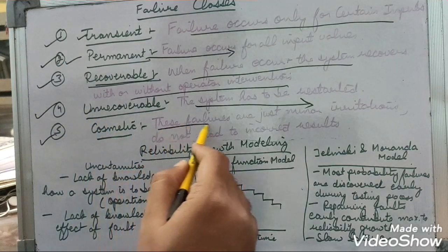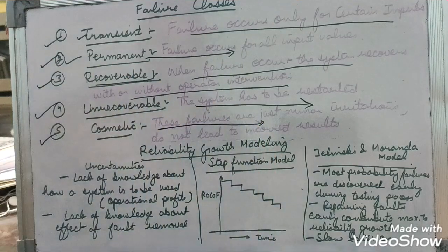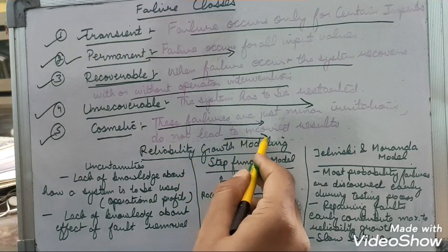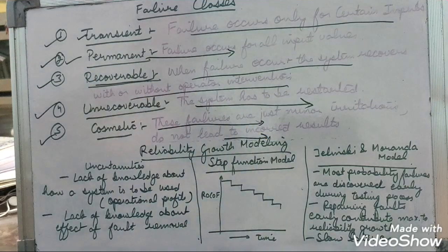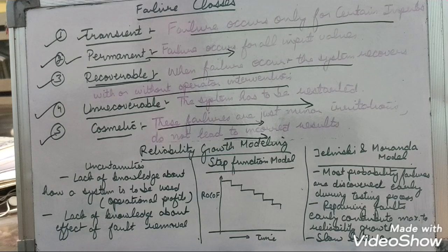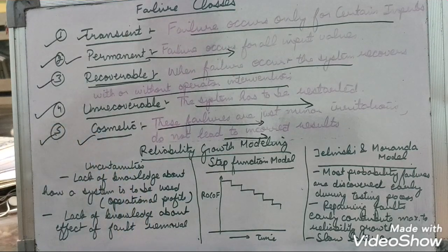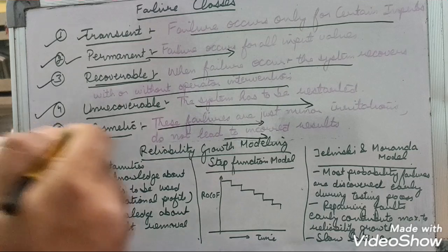Then we have cosmetic errors. These are simple errors which are just minor irritations in the system — they do not lead to incorrect results. For example, if you click the mouse and it registers a double-click causing the screen to be highlighted, this is a type of cosmetic error which won't affect results in any way, just a minor irritation.